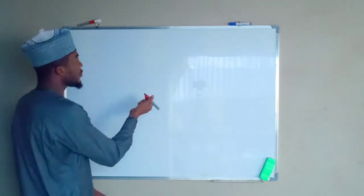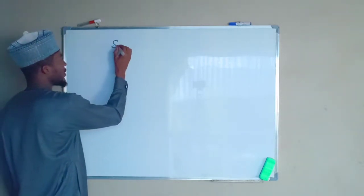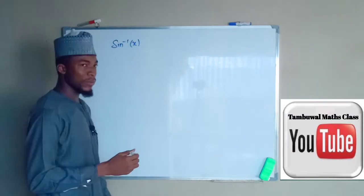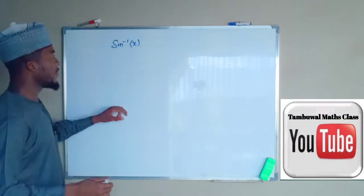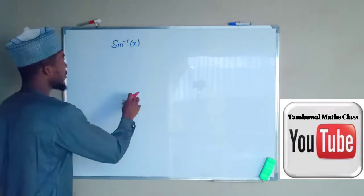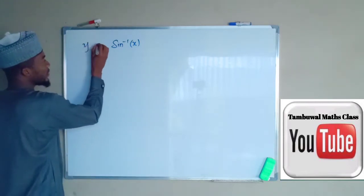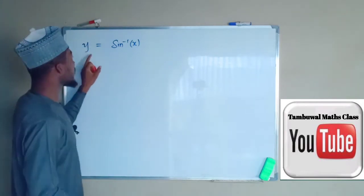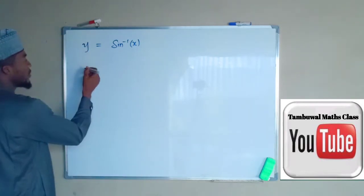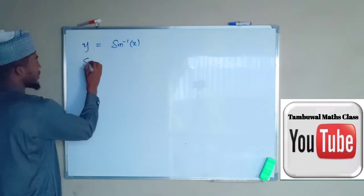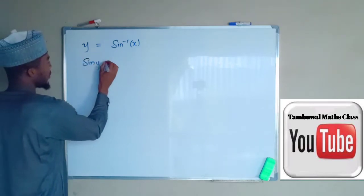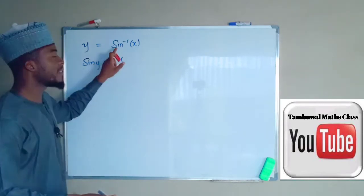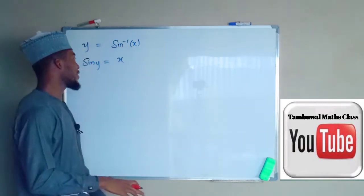First we are asked to find the derivative of sine inverse of x. The first thing we need to do is let y equal this function. We are going to multiply each side by sine, so on the left hand side we have sine y, and on the right hand side we have only x, because sine times sine inverse is equal to 1.